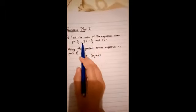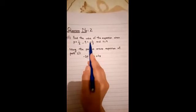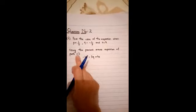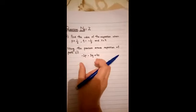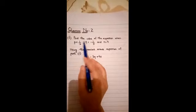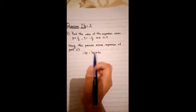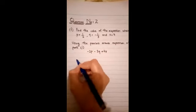Next one is find the value of the expression when p is equal to 1 over 2, q is equal to minus 1 over 3, and r is equal to 4. When you are going to solve the first part, you can get that answer. So I am doing the second part. I am going to put these values in this equation. So let's start.